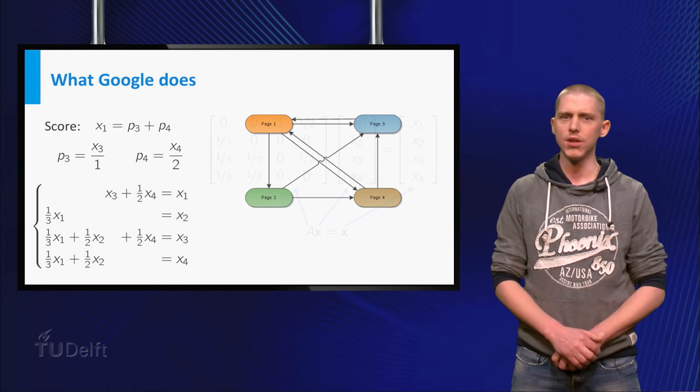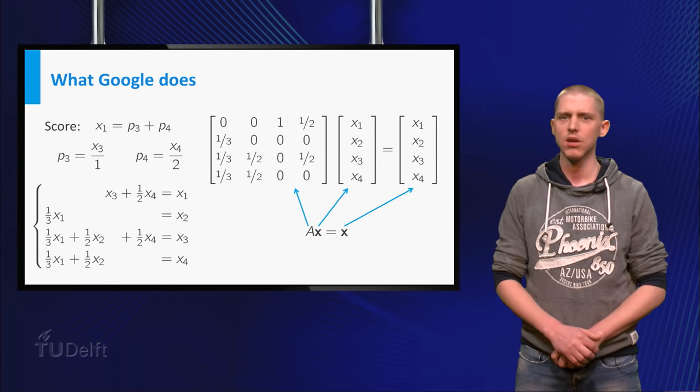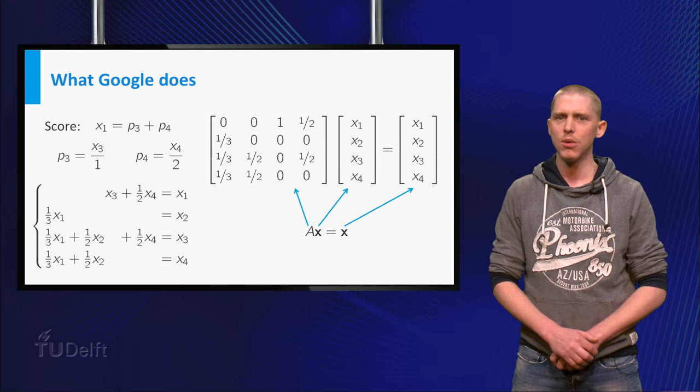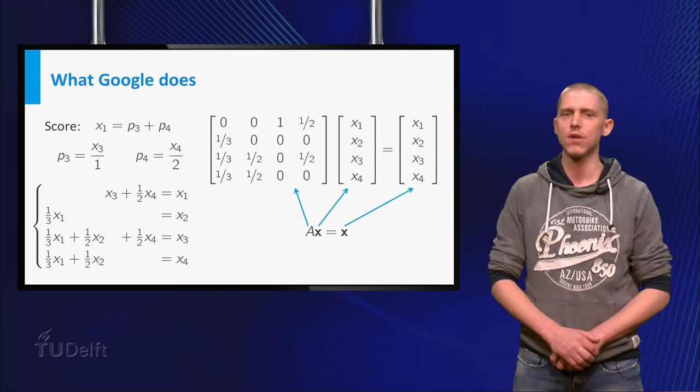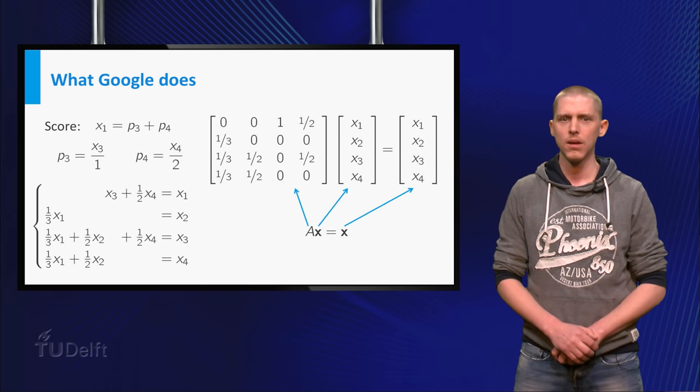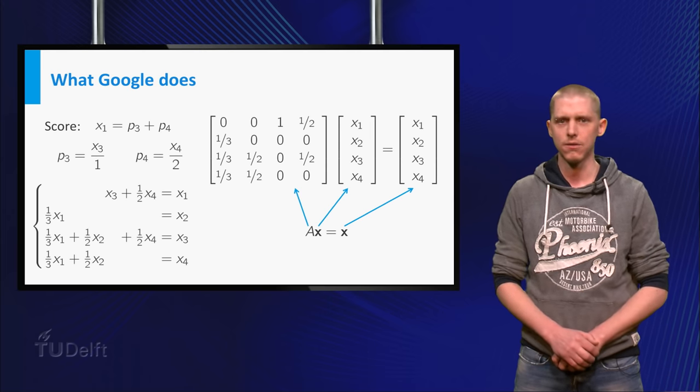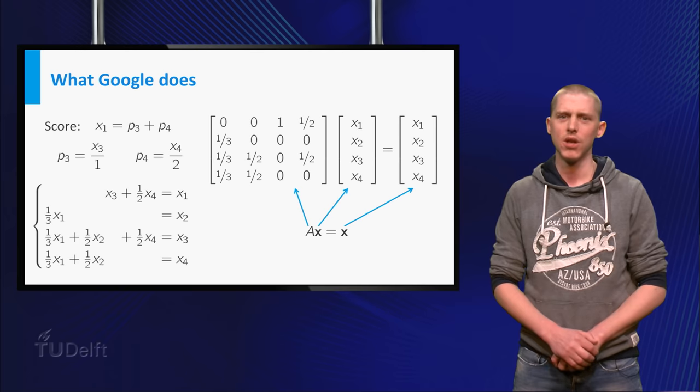But you can rewrite this by taking x as the vector of scores, which gives you A times x equals x, with A as shown. But this means we want a score vector x such as the matrix times this vector equals a multiple of the vector we were looking for. Such a vector is called an eigenvector, and this vector made Google a 500 plus billion dollar company.